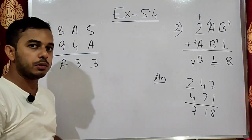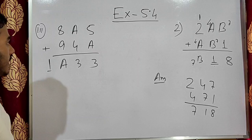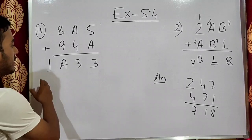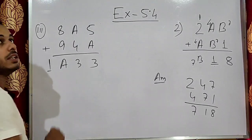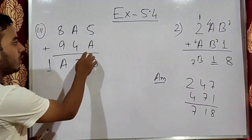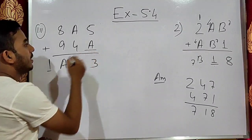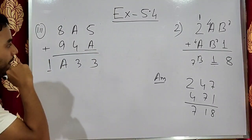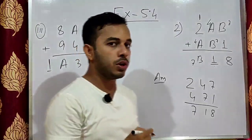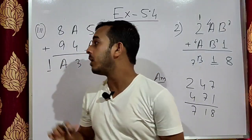Let us move to the third exercise question: 8A5 plus 94A equals 1A33. Here we have to find the value of the single letter A. Sign is plus, so we are finding a sum.